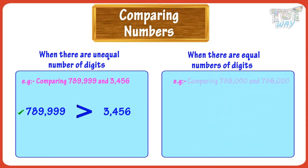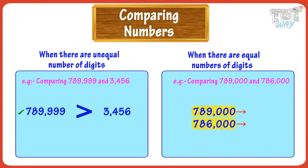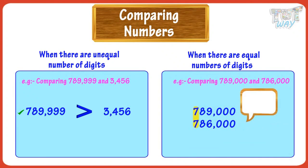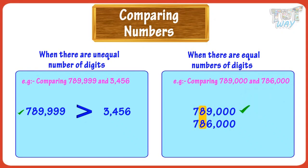Let's take another example. Here too, the numbers have an equal number of digits — both have six digits. First, we compare the digits at the biggest place; both are the same. So we compare the next digits — again, both are the same. So we move to the next digit: nine is bigger than six. In whichever number we get a bigger digit first, while comparing each digit starting from the biggest place, that number is bigger.